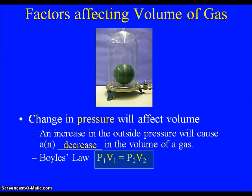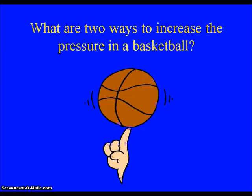The useful version of Boyle's Law is that P1 times V1 equals P2 times V2 — the initial pressure times the initial volume is equal to the final pressure times the final volume. That's our useful version of that formula.